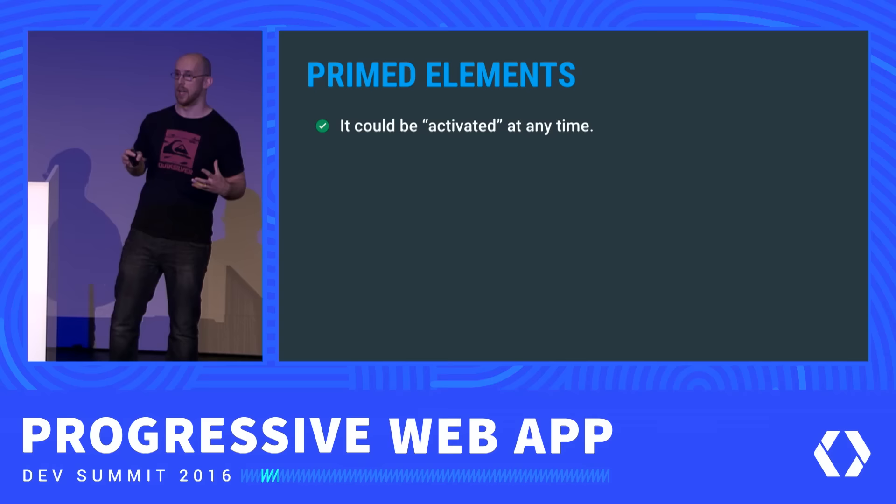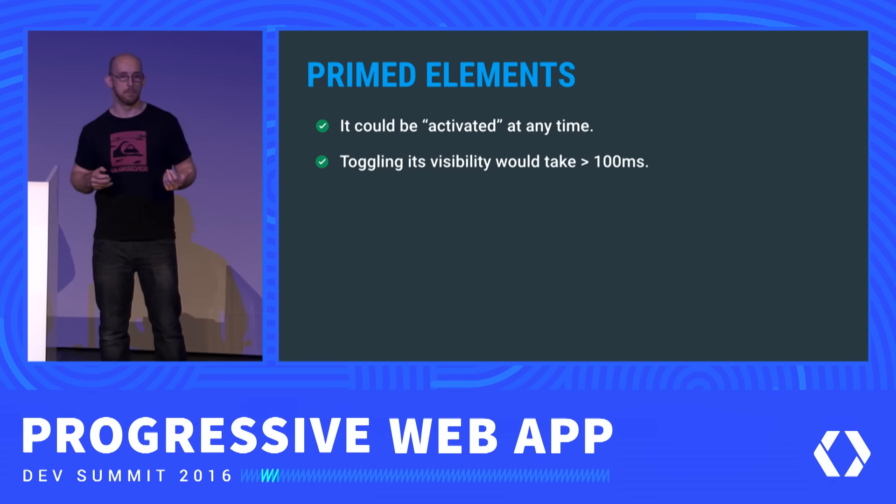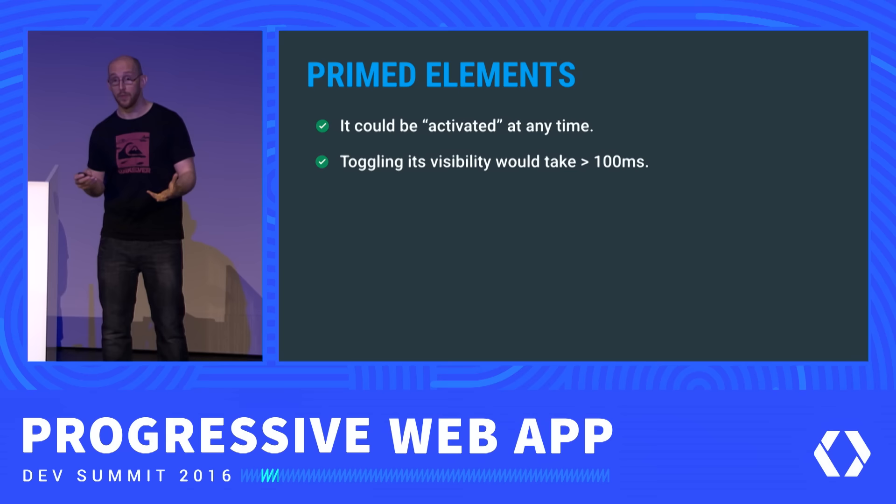The pointer-events property lets me talk about something I call a primed element — elements where you want that thing to be ready to go. A side nav is one of those, because when a user taps the button they expect it to just come right out. The general idea behind a primed element is that it's something that could be activated at any time, and if you were to toggle its visibility, it would take more than 100 milliseconds — so it would feel laggy.